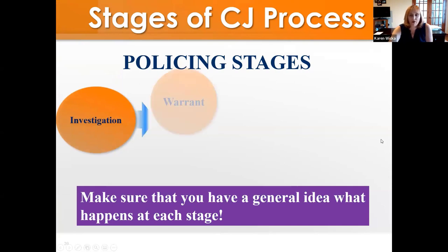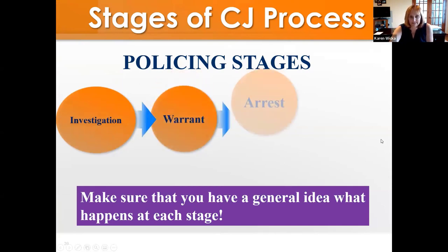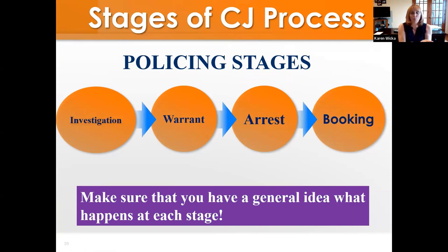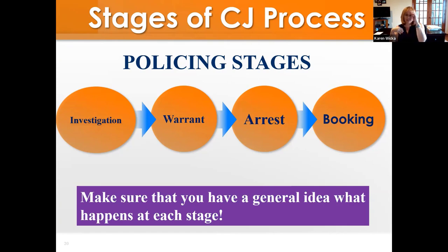The first steps are the policing steps. You have an investigation where they try to figure out what happened. Then they go to court and get a warrant to search or arrest. When they have all the evidence, they arrest Billy Bob. Then they bring him into the station and book him — making an administrative record that they have taken him into custody.